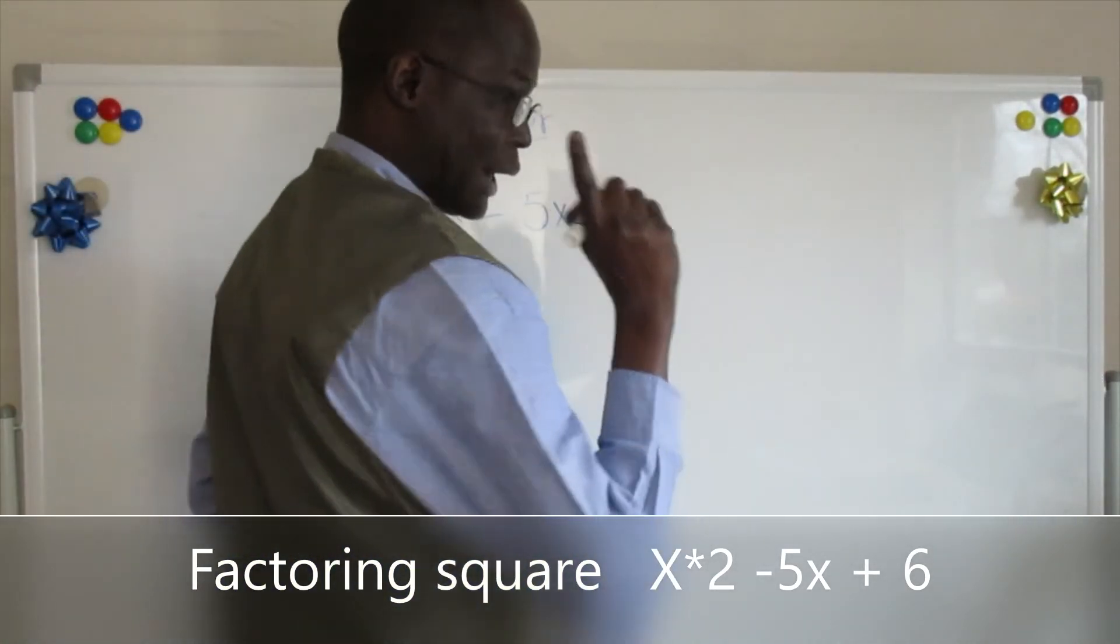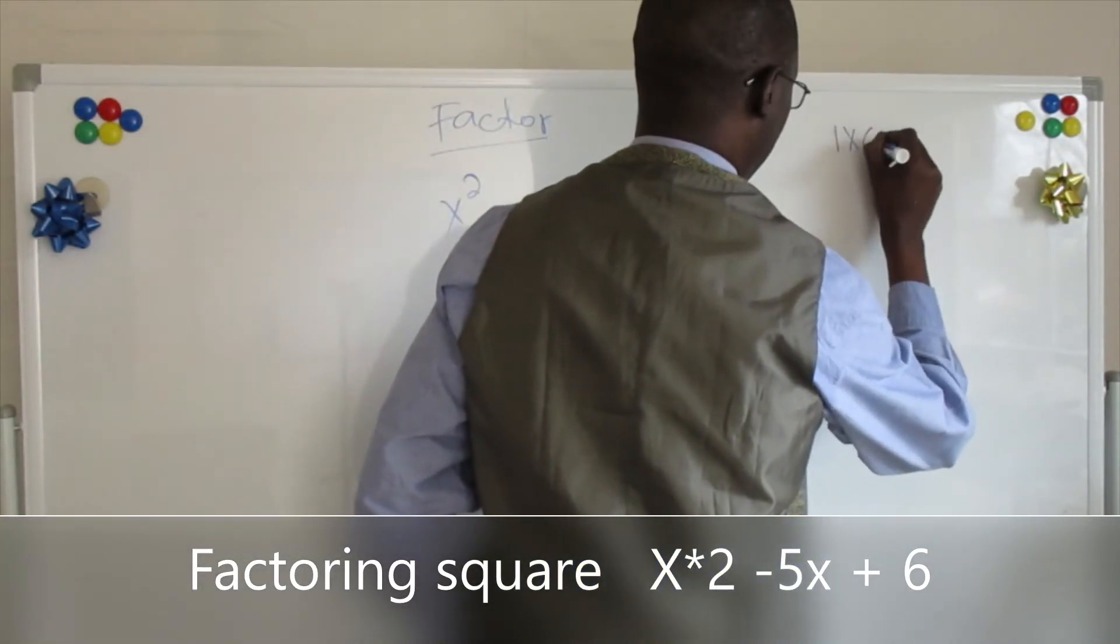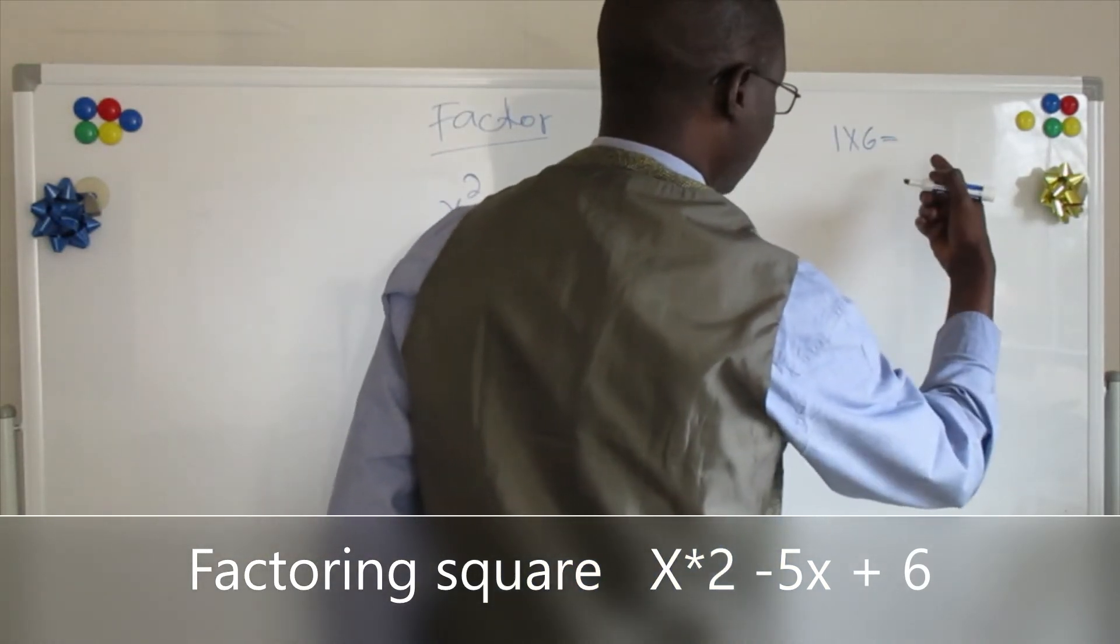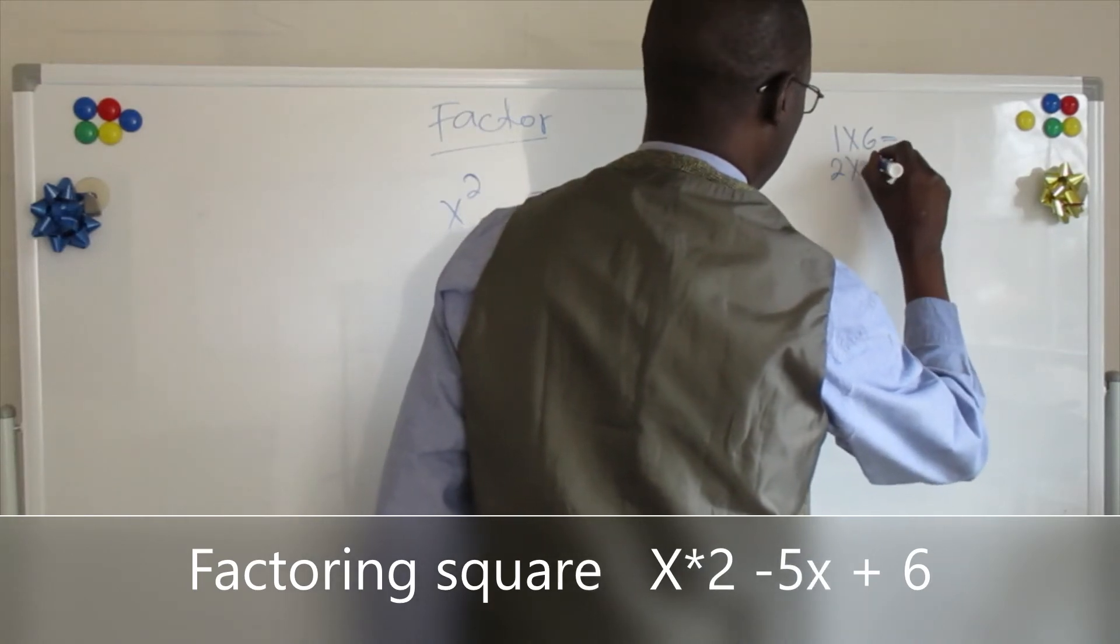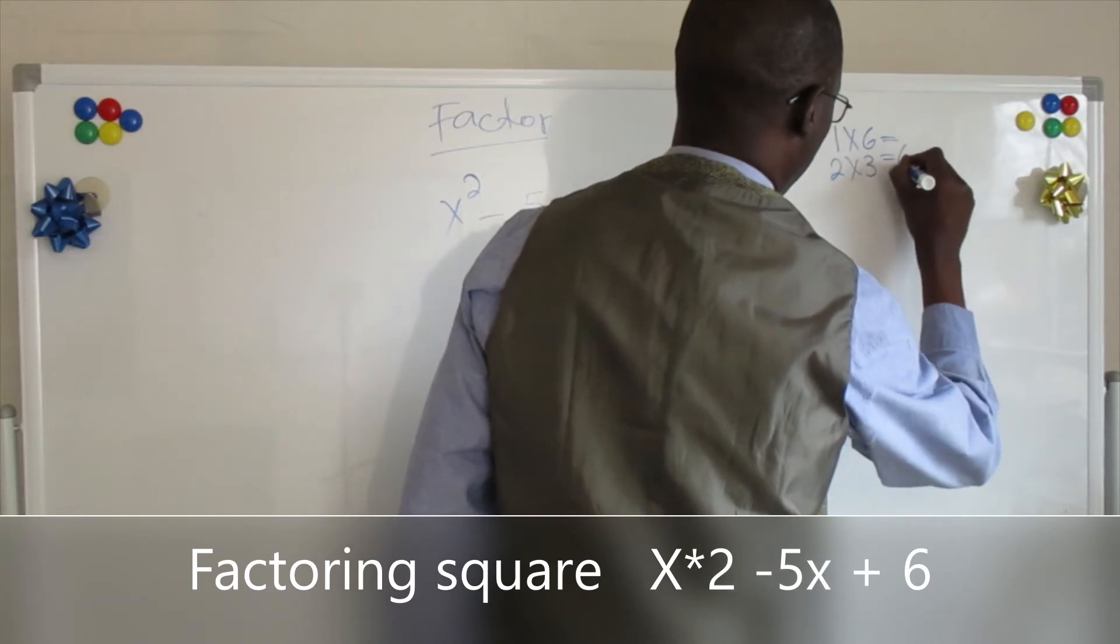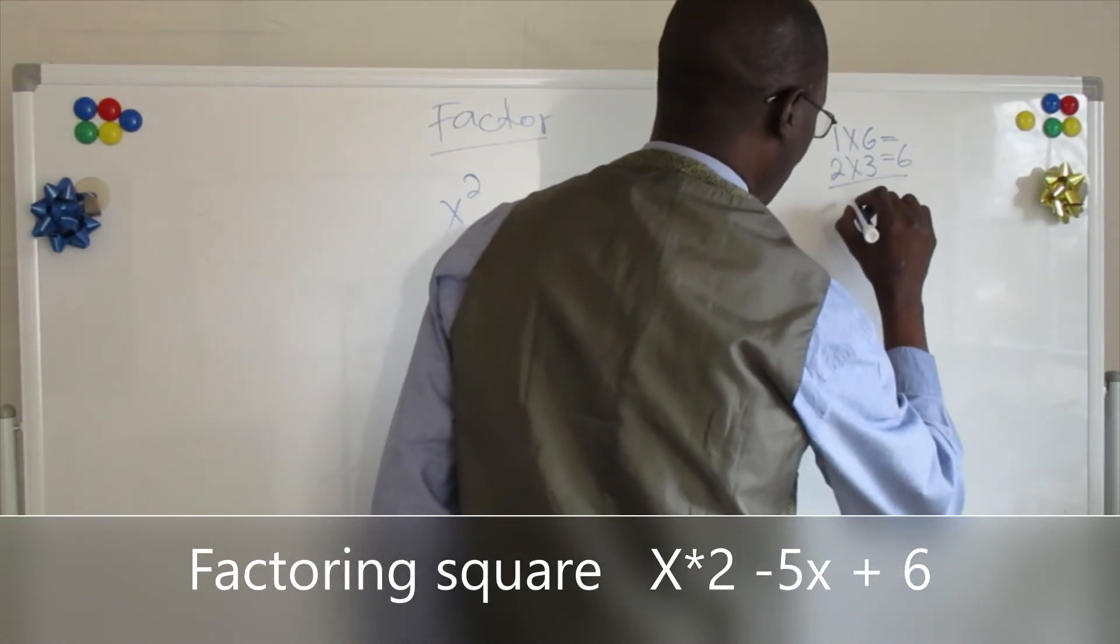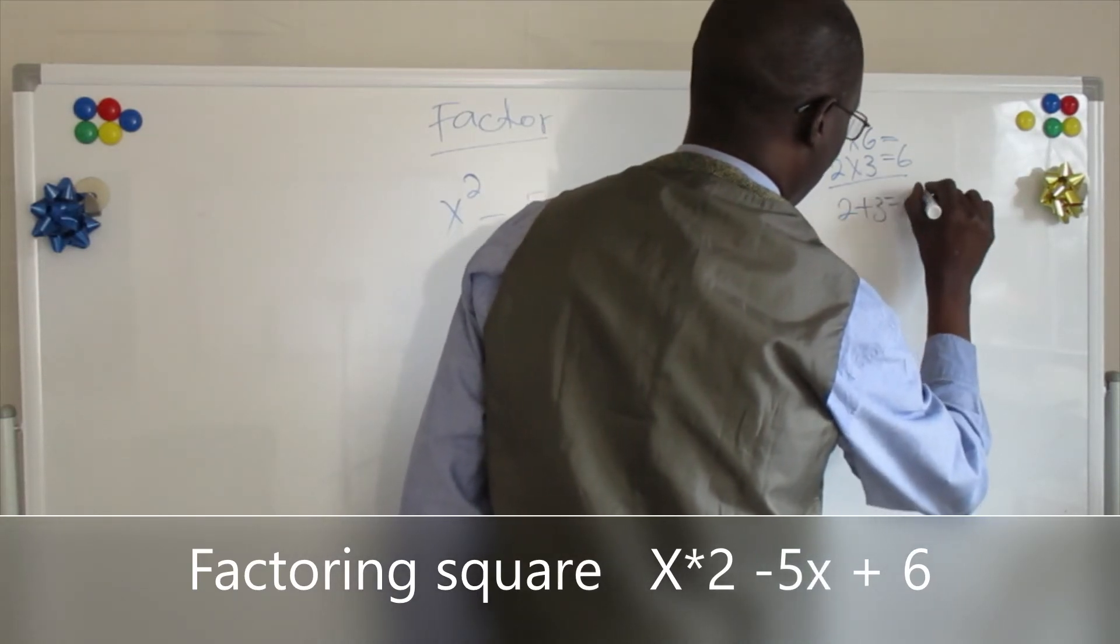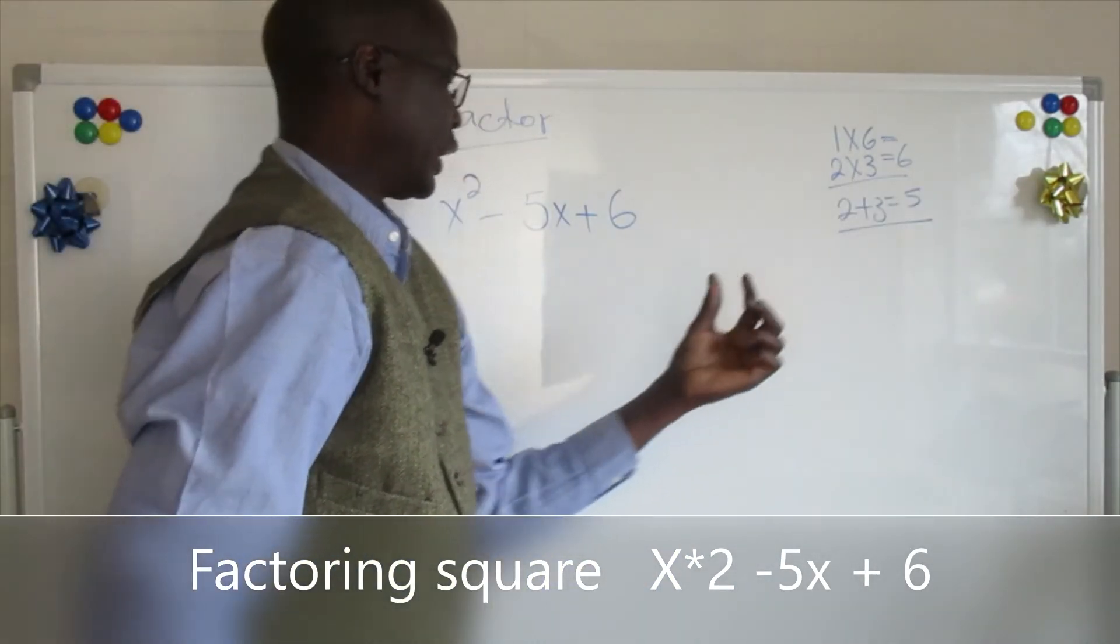So I'm going to deal with the last number. So I have 6. I have 1 times 6 equals 6, and if we combine we got 7, so that's wrong. So I have 2 times 3 equals 6, and 2 plus 3 equals 5. And that means I think that's the two numbers we need.